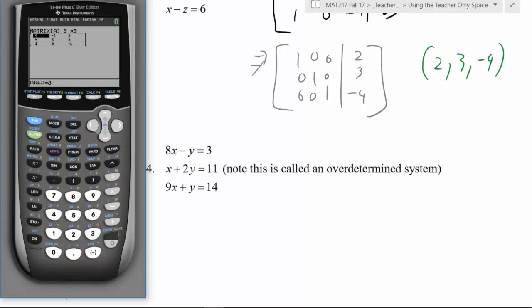So 8, negative 1, 3, 1, 2, 11, 9, 1, 14. Let's double check this. 8, negative 1, 3, 1, 2, 11, 9, 1, 14. Perfect.